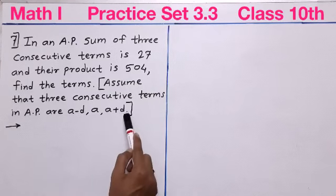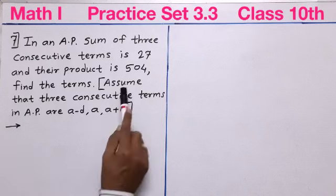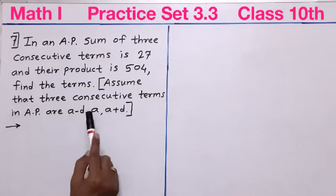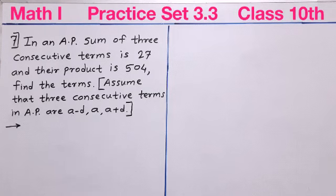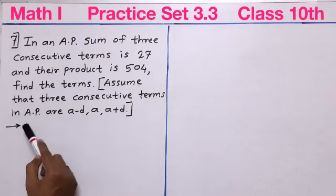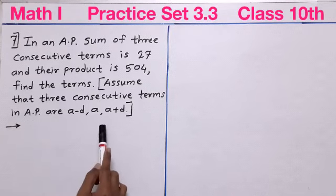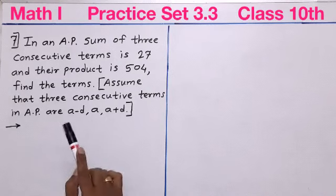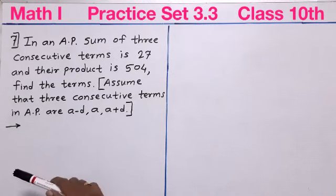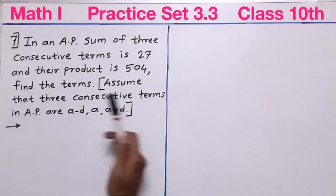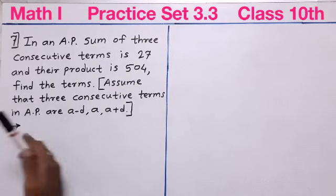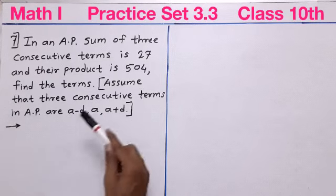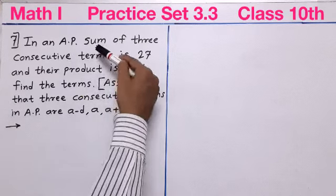A hint is given in a square bracket. Assume that three consecutive terms in an AP are A minus D, A, and A plus D. Since it is already given in the hint, we don't need to write 'let the three consecutive terms be...' We will directly use the conditions.